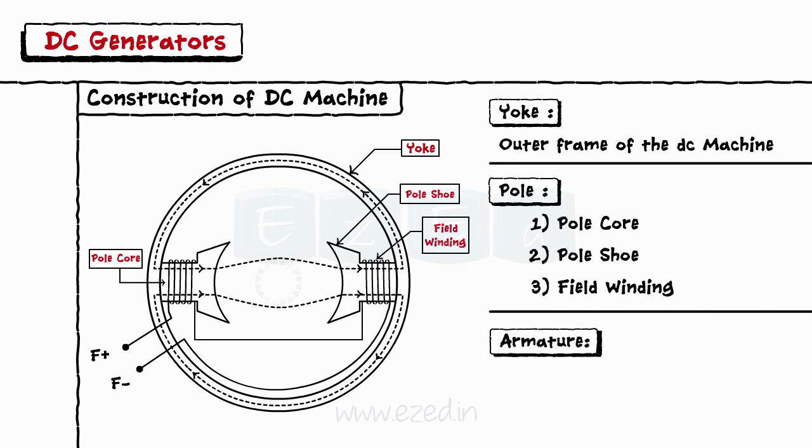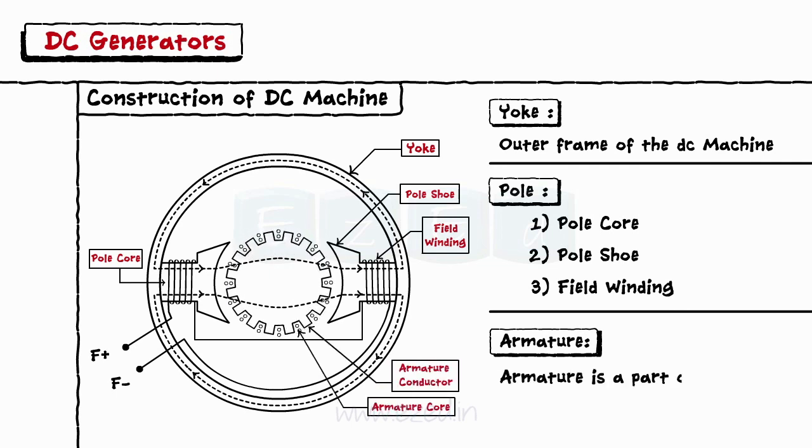The armature. Armature core is cylindrical in shape and is mounted on a circular shaft. Armature is a part of a machine which rotates in a circular direction.